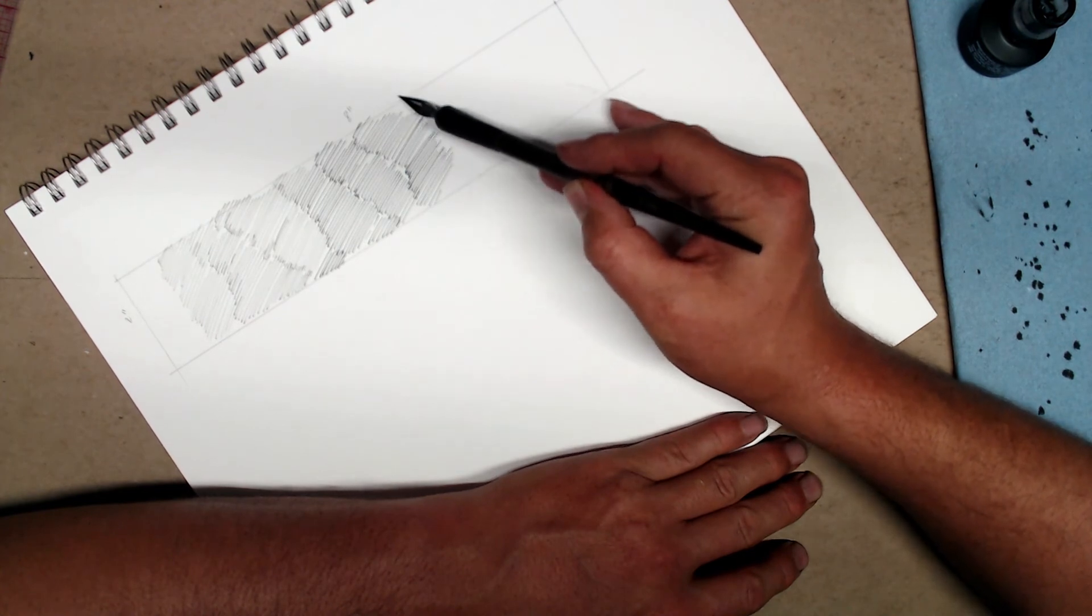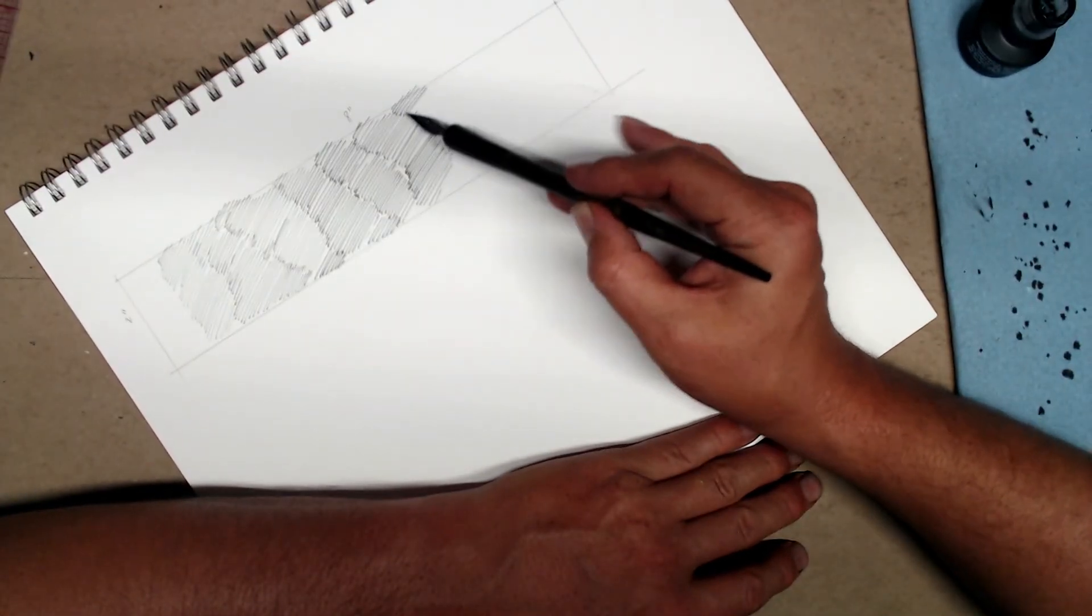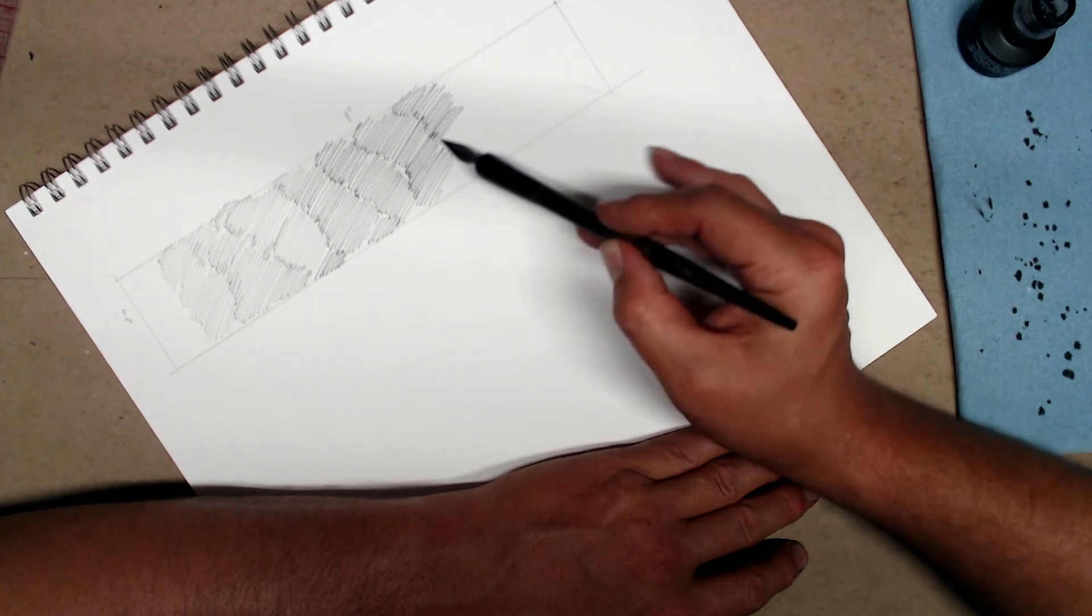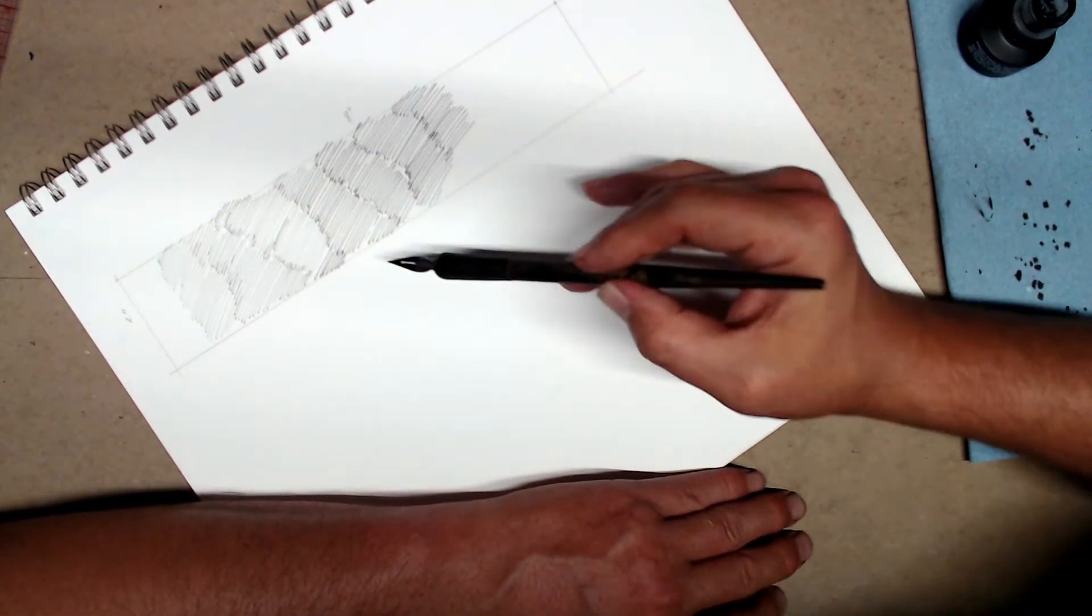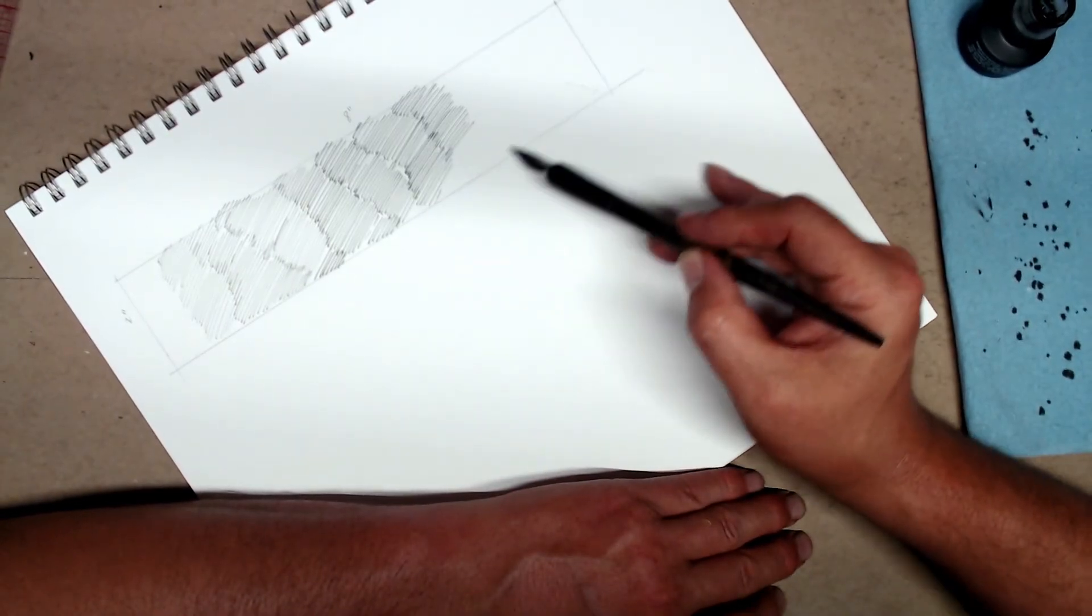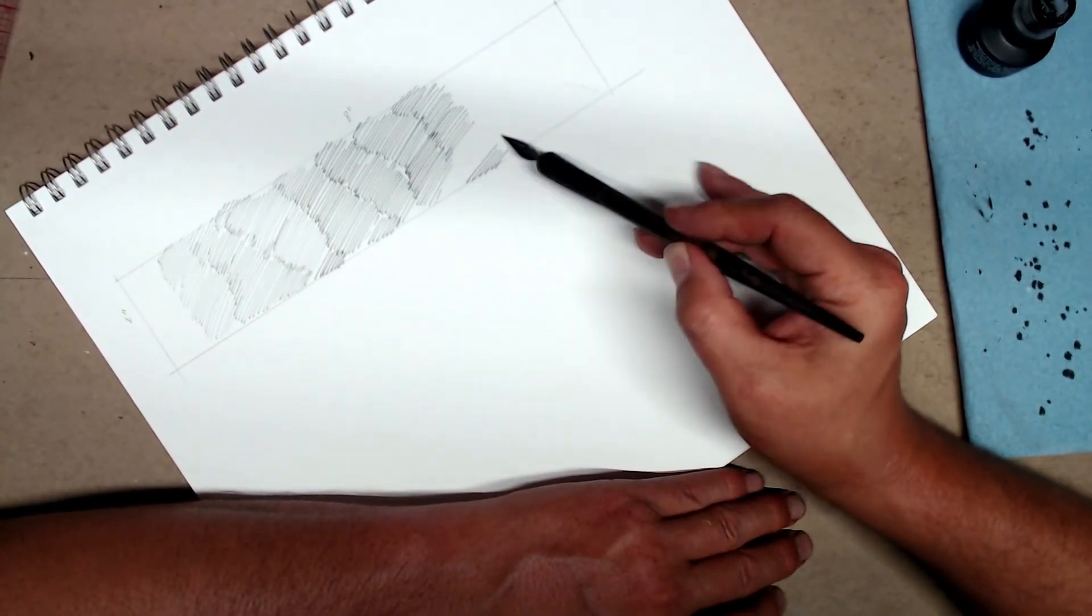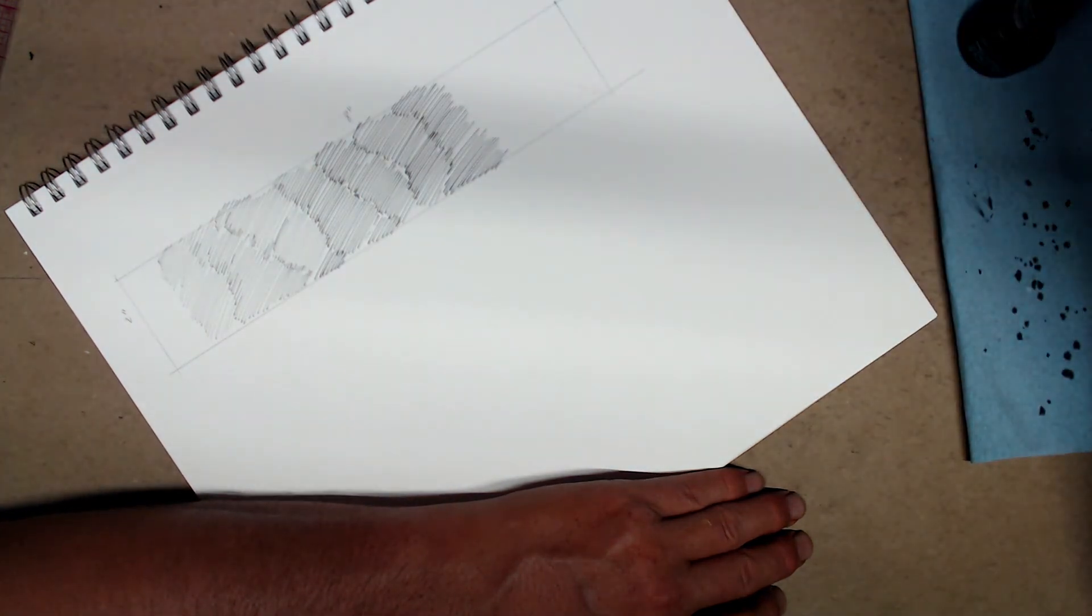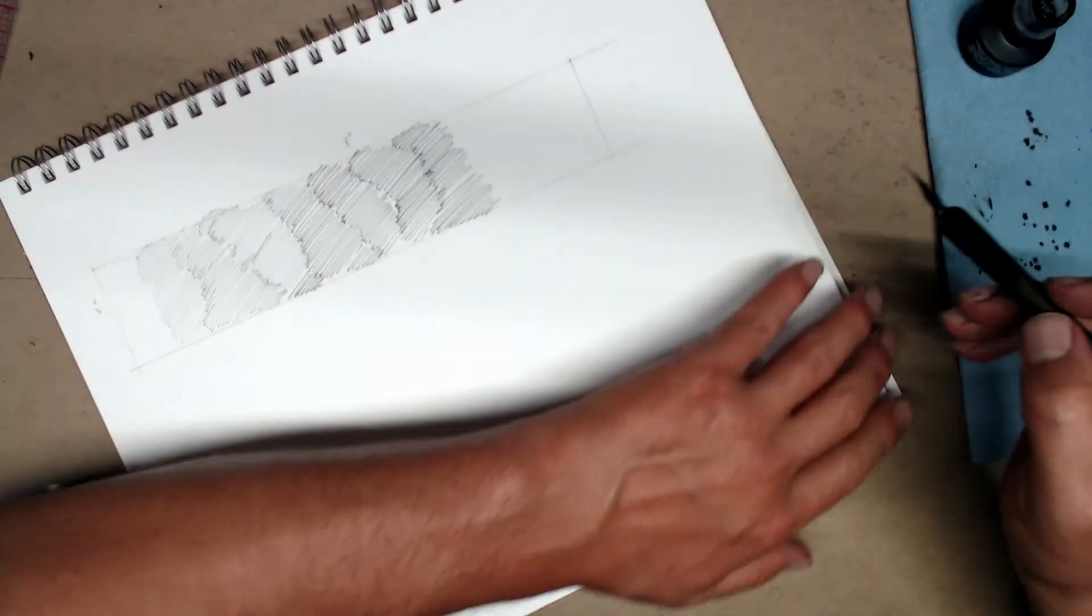By the way, usually there's kind of an optimal angle at which you're going to create the strokes. It's easier to rotate the paper than to rotate your elbow. So, quite often, instead of changing the angle of the stroke, I'm just going to keep rotating the angle of the paper. Just an easier way of applying value.